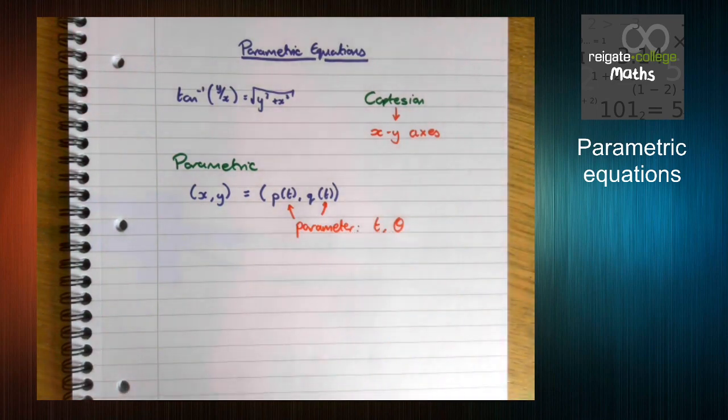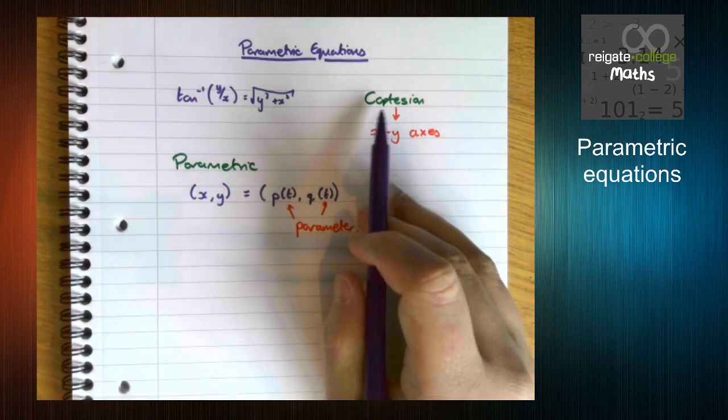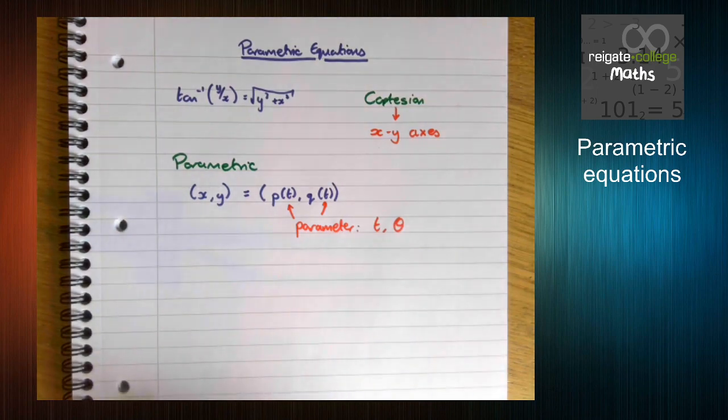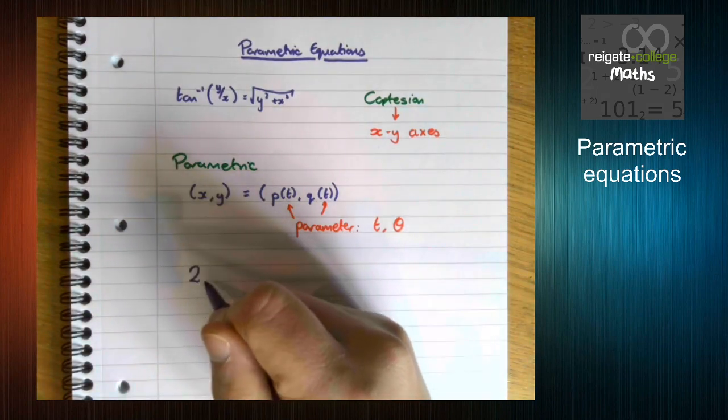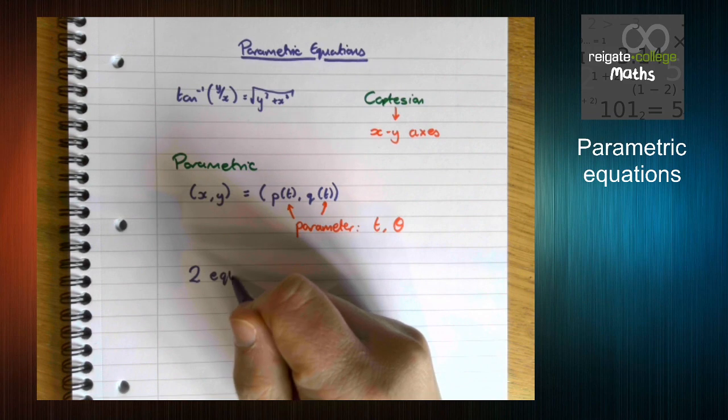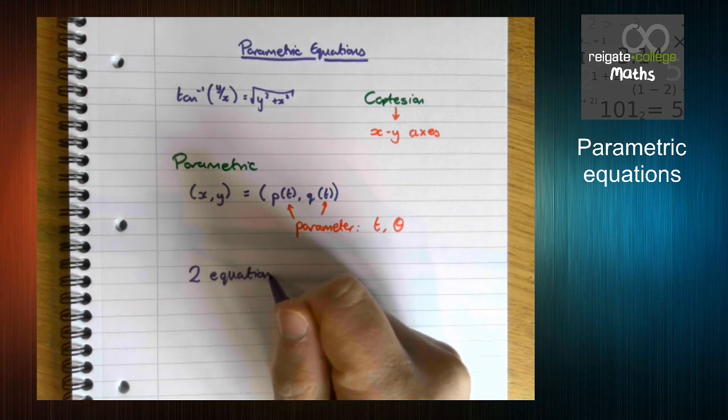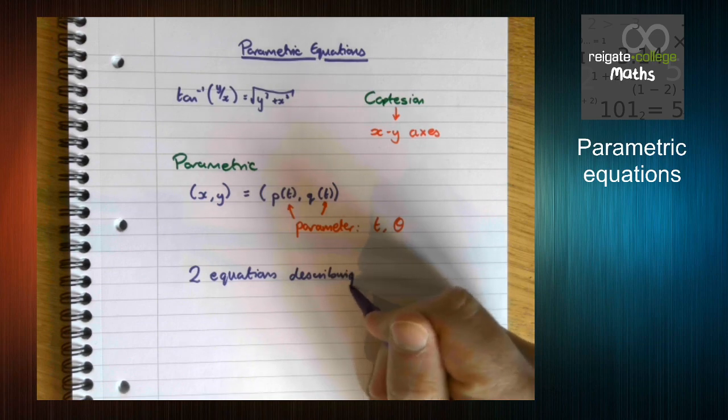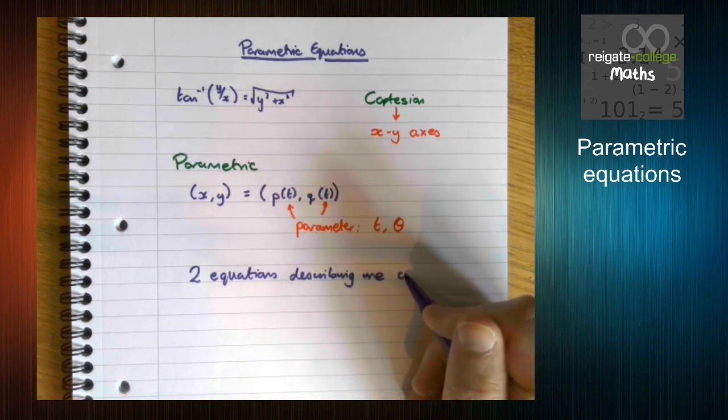So, whereas with Cartesian we have one equation describing one curve, parametric we have two equations describing one curve.